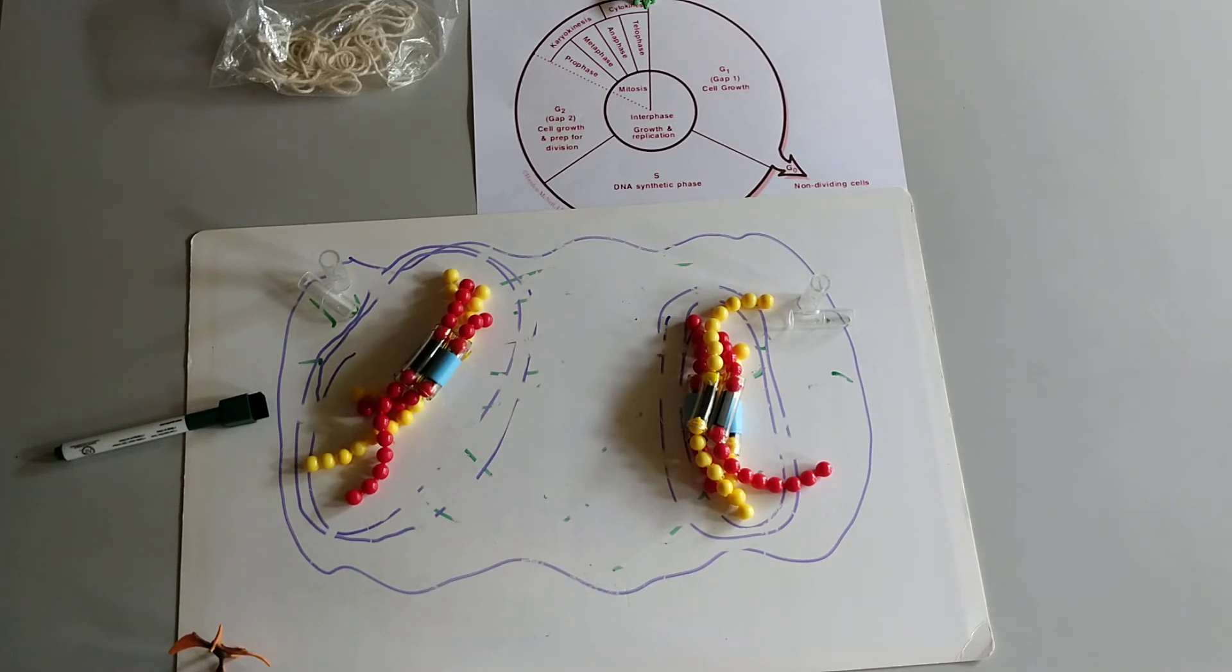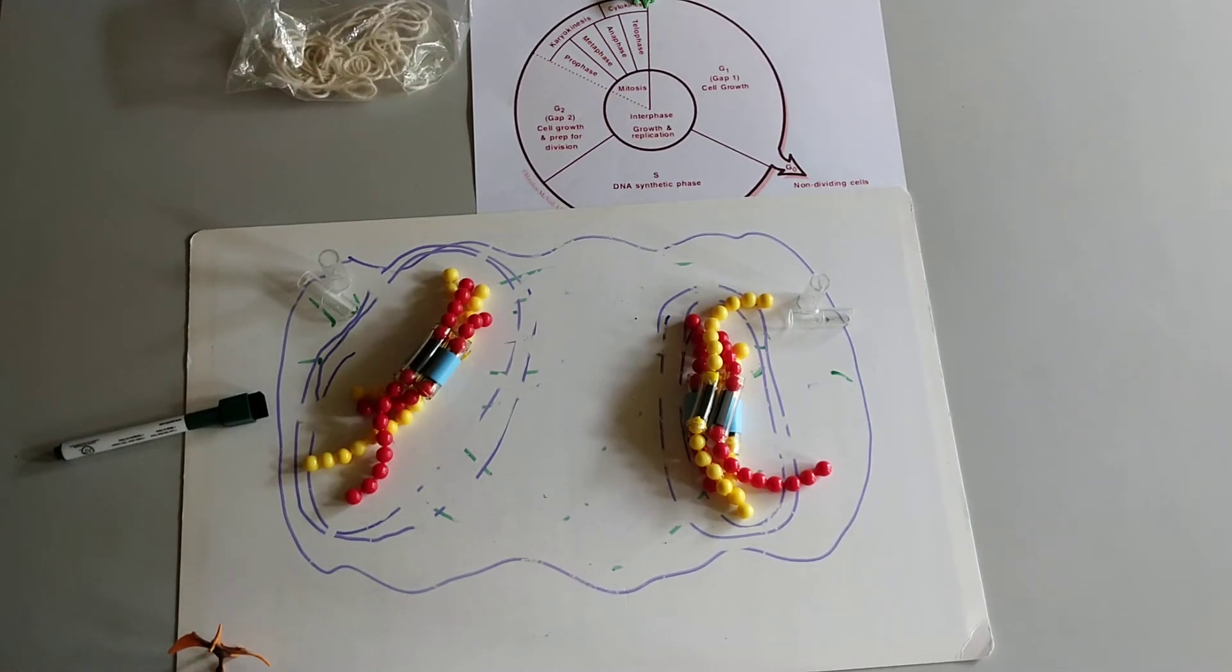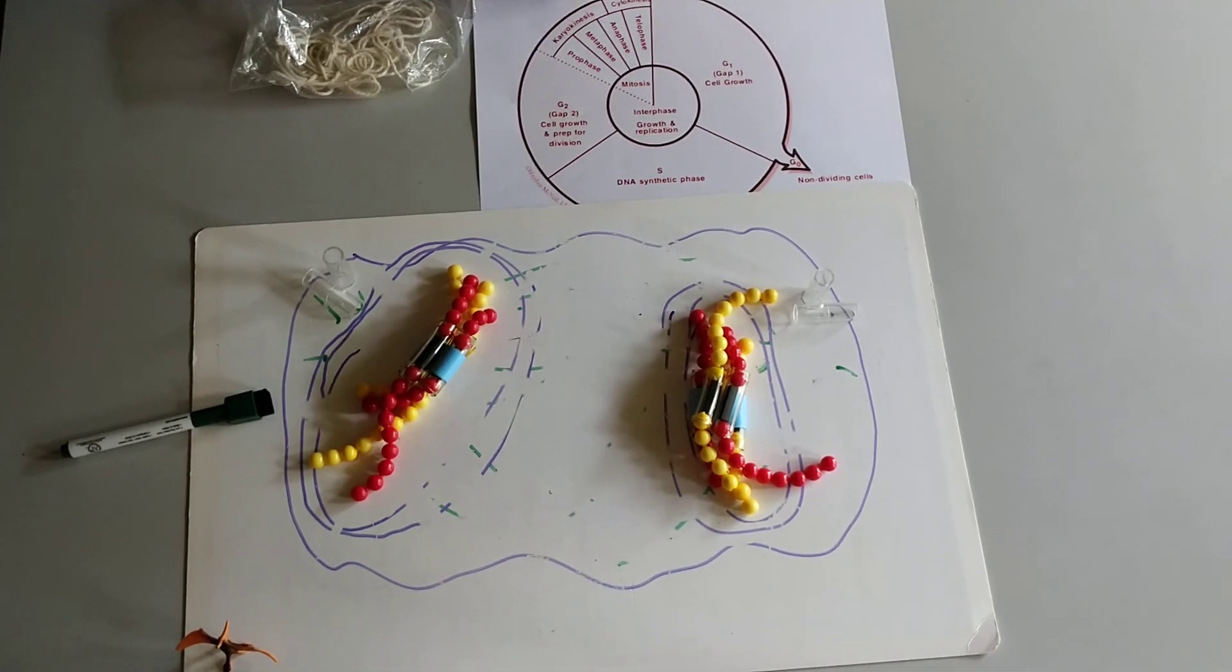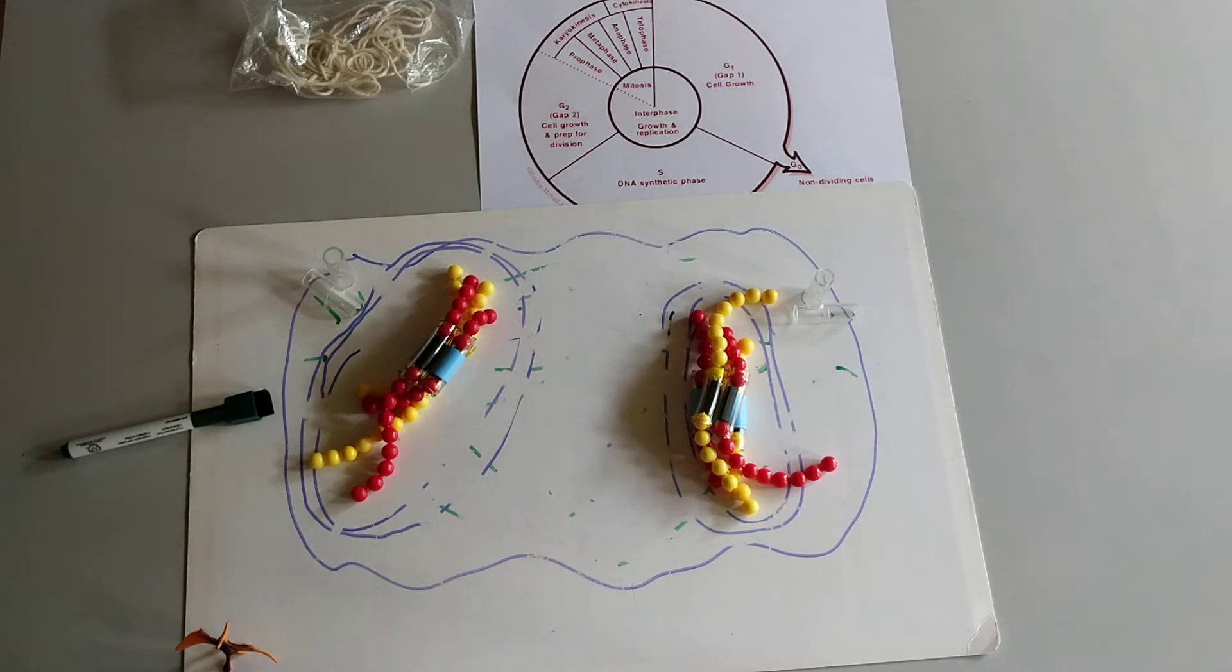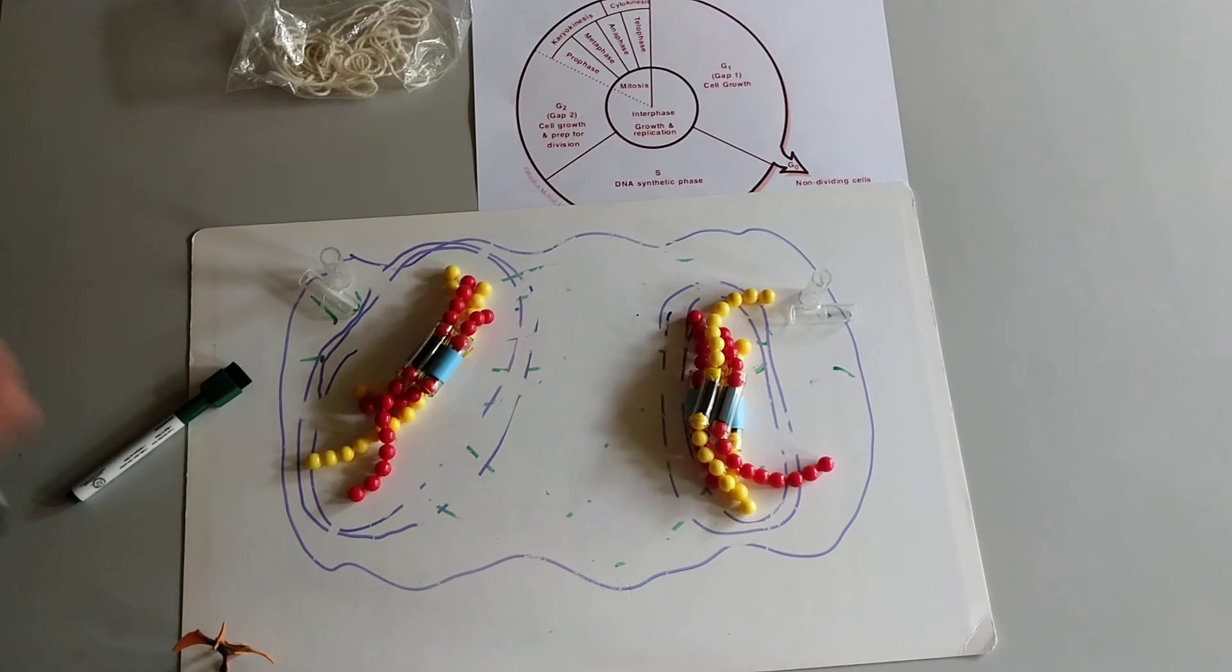But the cell is not done dividing. Most cells don't stop dividing here. They also need to divide the cytoplasm. So we already had karyokinesis, which is the movement of the nucleus, right? Now we need cytokinesis, the movement of the cell or the division of the cell.